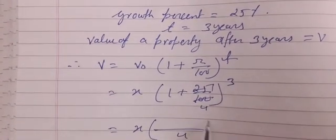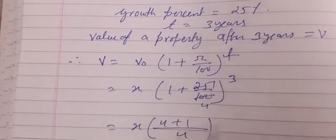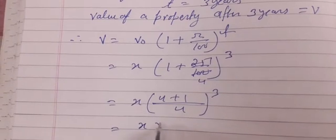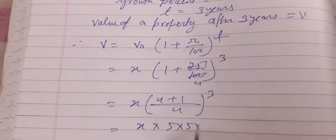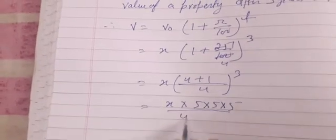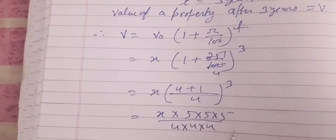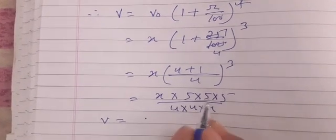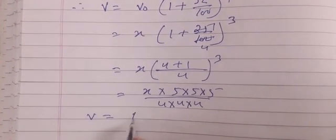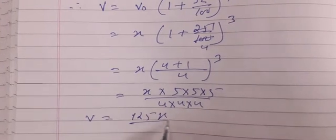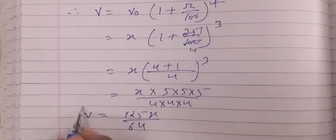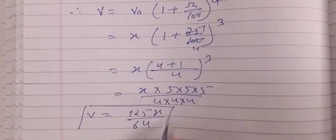So this will be x into 5 × 5 × 5 upon 4 × 4 × 4. So v is equals to 125x divided by 64. So this is the final value of that property. This is half the answer of our question.